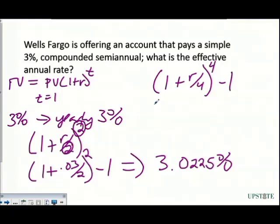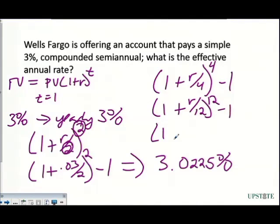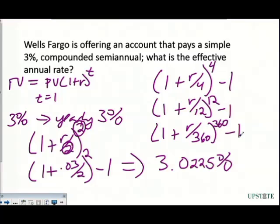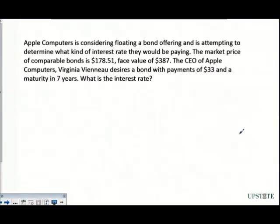For monthly compounding, it's (1 + r/12)^12 minus 1. For daily compounding, it's (1 + r/360)^360 minus 1. These all give the effective rate in decimal form.